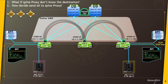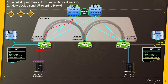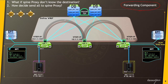A second question should come to your mind: how does the leaf switch decide to send to the spine proxy? There must be something that makes the decision. I'm going to explain where we decide to use the spine proxy — this only happens when the leaf switch doesn't know anything about the destination. But before I explain that, you need to understand the forwarding components. Let me explain all the forwarding components first, then I'll show you how the spine proxy decision is made.